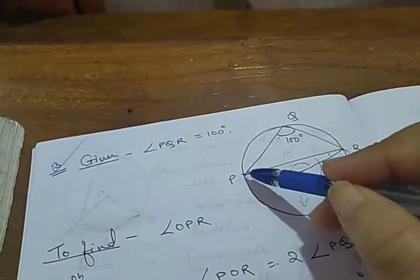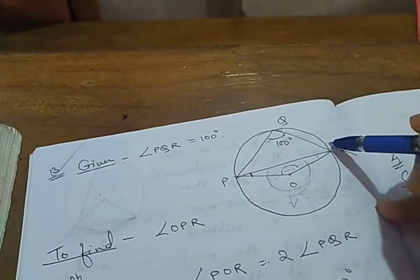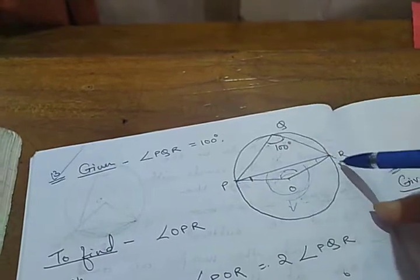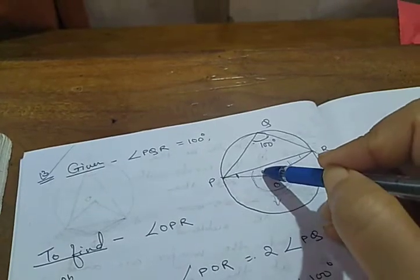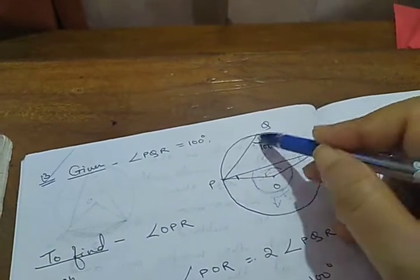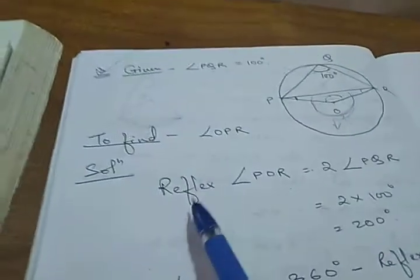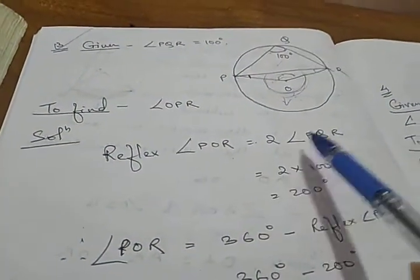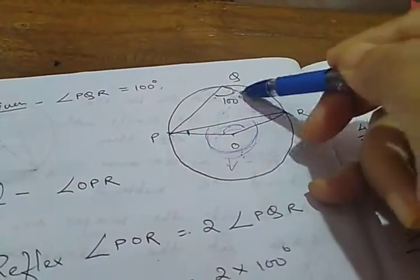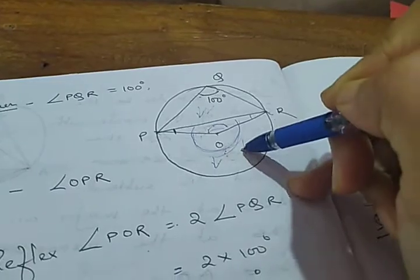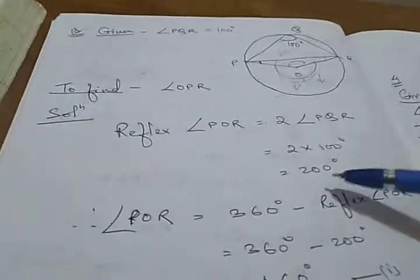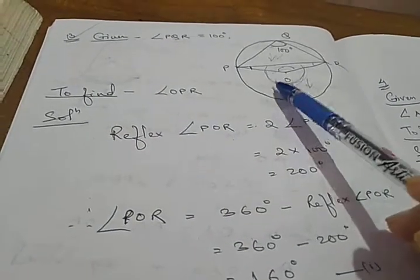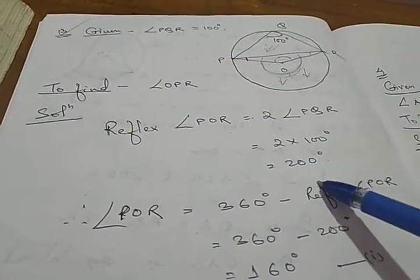Here, arc PR subtends angle PQR at the remaining part of the circle, and the reflex angle POR at the center. Note that it is not the interior angle POR, but the reflex of POR — these two are related. So reflex angle POR equals twice angle PQR, because they should be in the same direction. Therefore, reflex angle POR equals 2 times 100 degrees, which is 200 degrees.